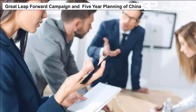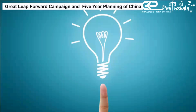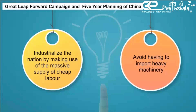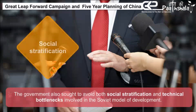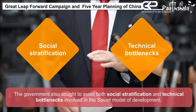The central idea behind the Great Leap Forward Campaign was to industrialize the nation by making use of the massive supply of cheap labor and avoid having to import heavy machinery. The government also sought to avoid both social stratification and technical bottlenecks involved in the Soviet model of development.